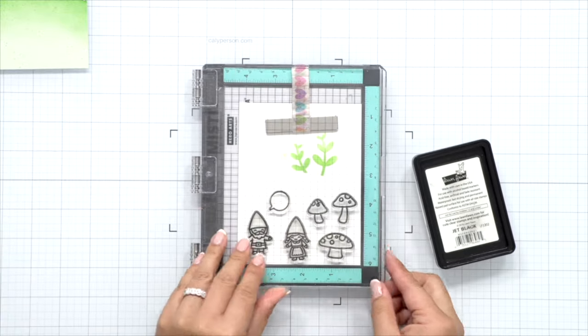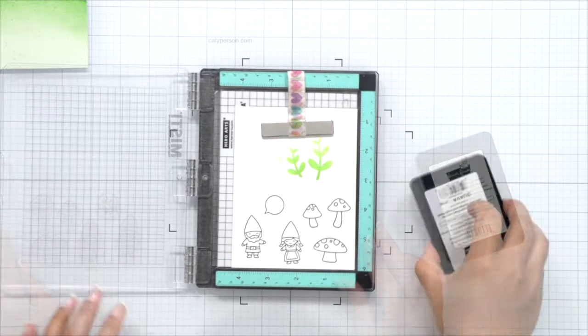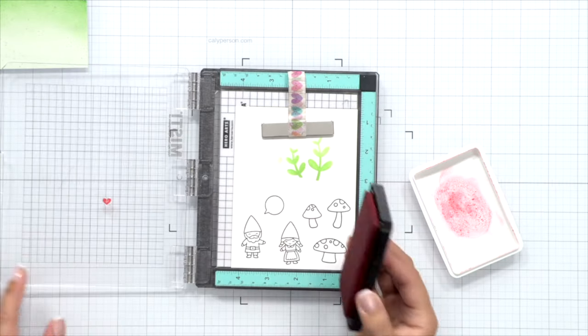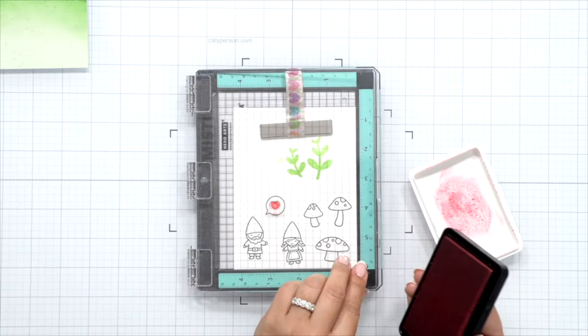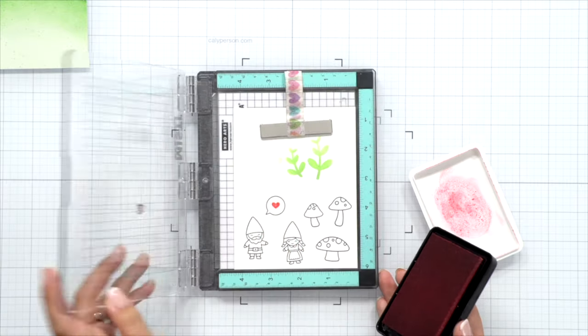And before I take these stamped images out of my MISTI, I'm going to go ahead and stamp a little pink heart at the center of that speech bubble as well using that guava ink to coordinate with the heart garden in our background.